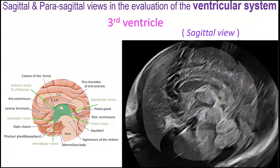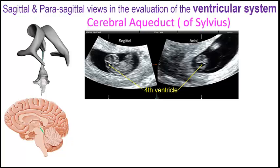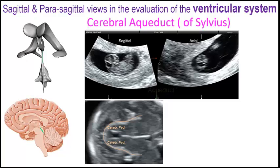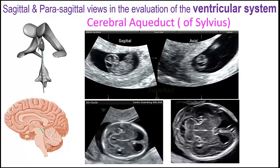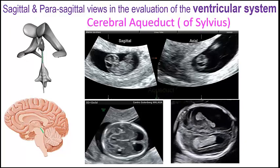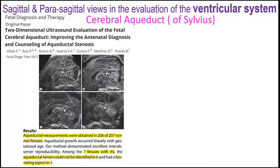The cerebral aqueduct or aqueduct of Sylvius is very prominent in the first trimester and also clearly seen in the axial views during the early second trimester. But beyond 18 or 19 weeks, its visualization in the axial planes is rare. So in the second and third trimesters, if we want to visualize the aqueduct, we must go to the mid-sagittal plane.